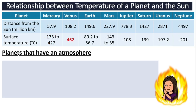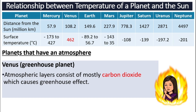How about planets that do have an atmosphere? We will look at Venus first. Venus is a greenhouse planet. The atmospheric layer is like a very, very thick and warm jacket because of its content — it has a very high content of carbon dioxide, more than 96%, which causes the greenhouse effect. That is why a lot of heat is trapped within that atmosphere, making Venus the hottest planet in the whole solar system. It can go up to 462 degrees Celsius.